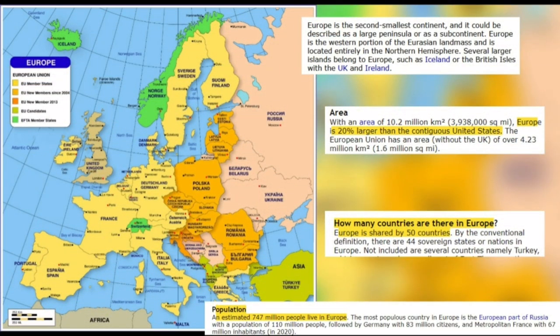Europe is the second smallest continent and it could be described as a large peninsula or as a subcontinent. Europe is the western portion of the Eurasian landmass and is located entirely in the Northern Hemisphere. Several larger islands belong to Europe, such as Iceland or the British Isles with the UK and Ireland. Europe is 20% larger than the contiguous United States. Europe is shared by 50 countries, and an estimated 747 million people live in Europe.